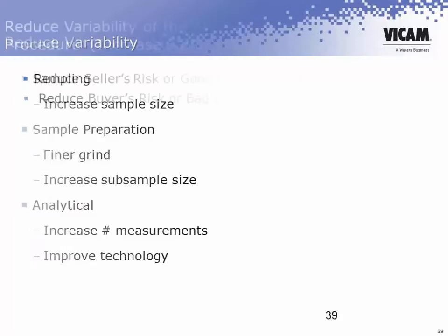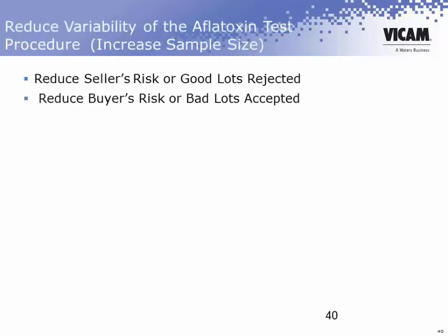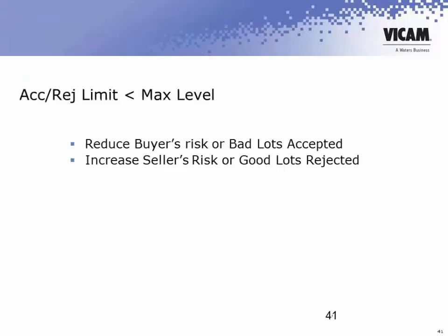So reducing the overall variability of the testing actually benefits both buyers and sellers. It reduces the seller's risk of having good lots rejected, and it reduces the buyer's risk of accepting a bad lot. Another approach is to decrease the accept-reject level that's set. So if the statutory level is 20 ppb, the buyer could specify that a product has to be less than 15 ppb. That reduces the buyer's risk of accepting a bad lot, but it increases the seller's risk of having a good lot rejected due to a false positive.